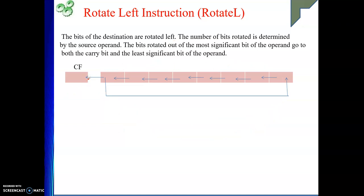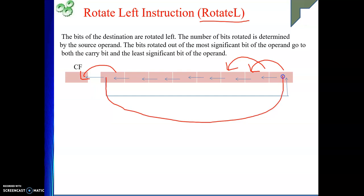So the going-out bit goes to two positions. Since I am rotating left, bits rotate to the left, and the bit going out goes to carry as well as to the vacated position created at the least significant end. This is the difference between shift and rotate instructions.